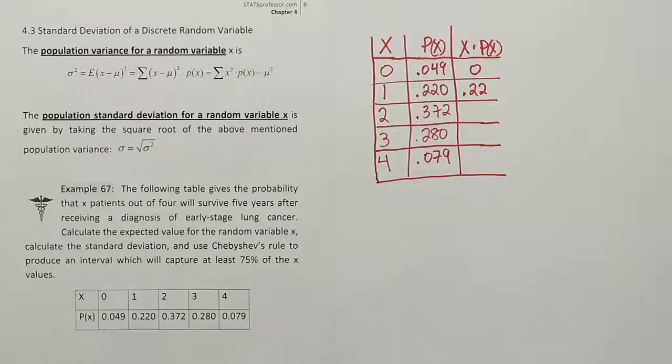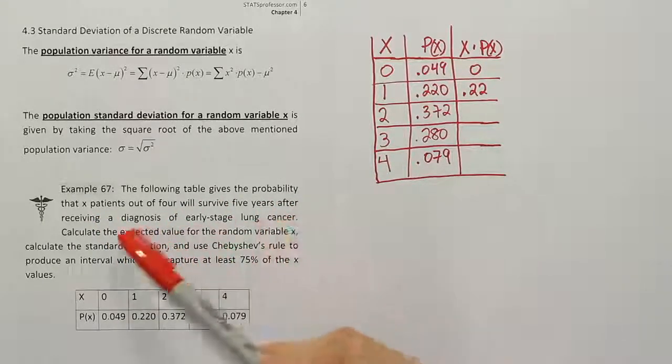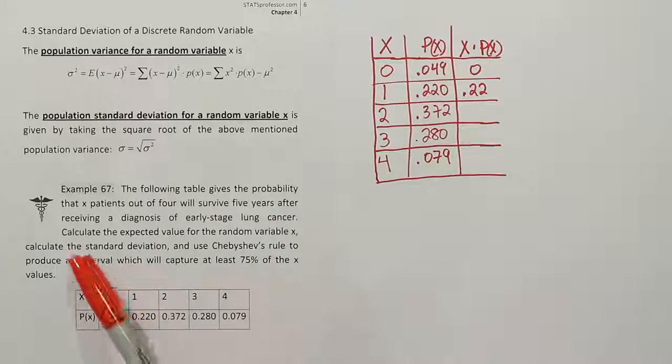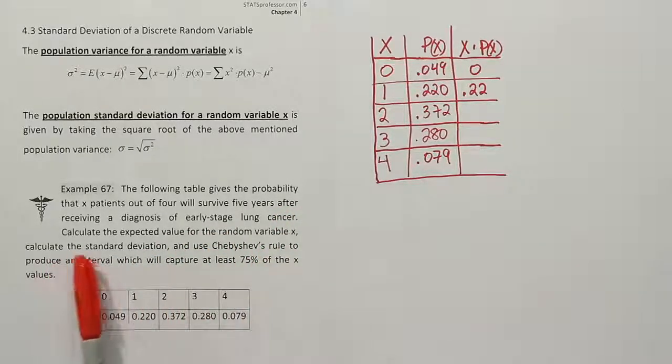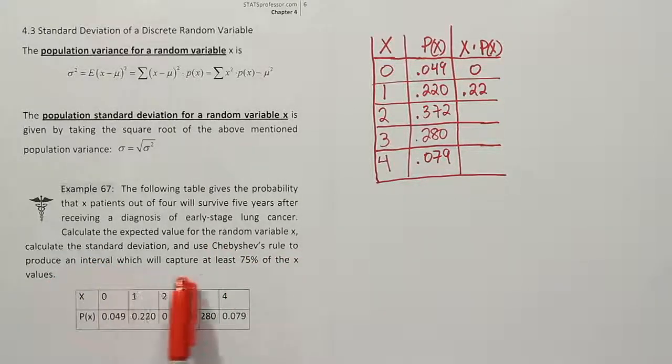Example 67. The following table gives the probability that X patients out of four will survive five years after receiving a diagnosis of early stage lung cancer. Calculate the expected value for the random variable X. Calculate the standard deviation and use Chebyshev's rule to produce an interval which will capture at least 75% of the X values.